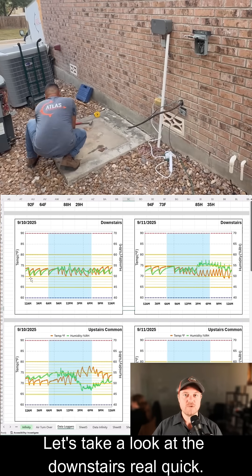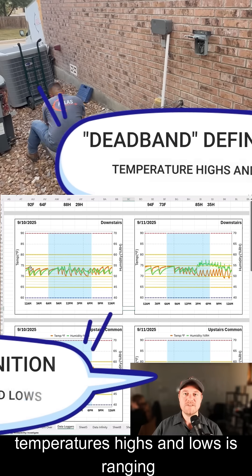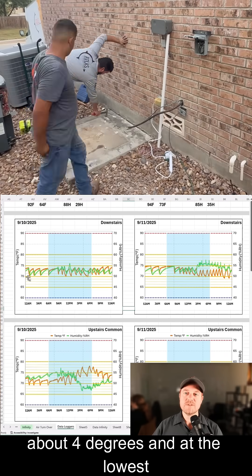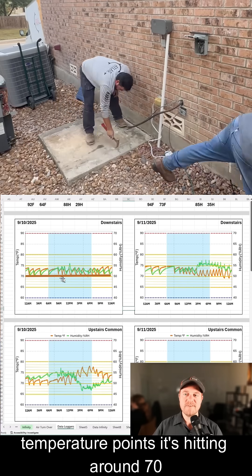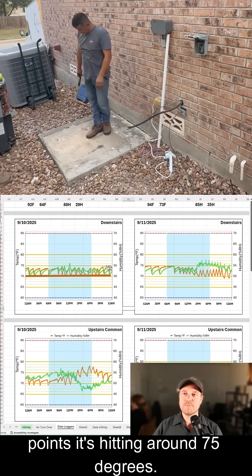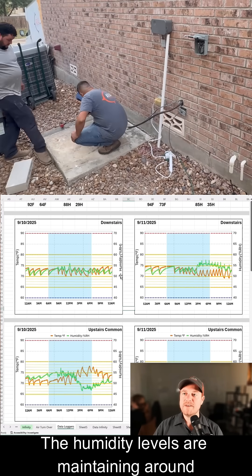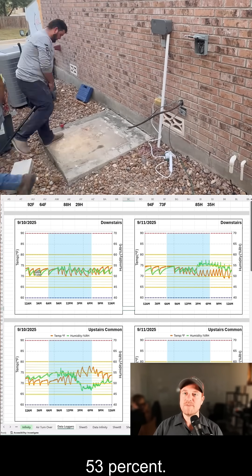Let's take a look at the downstairs real quick. You can see that the dead band, or the temperatures highs and lows, is ranging about four degrees, and at the lowest temperature points it's hitting around 70 degrees, and at the highest temperature points it's hitting around 75 degrees, so about a five degree swing on this day. The humidity levels are maintaining around 53 percent.